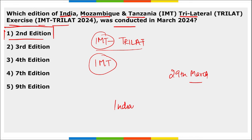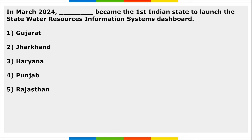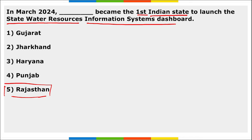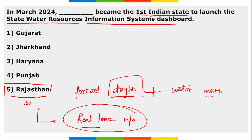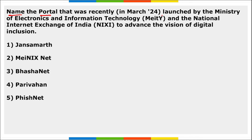From the Indian side, INS Teer and INS Sujata took part in the IMT Trilat exercise. Next, Rajasthan became the first Indian state to launch the State Water Resource Information System Dashboard. This dashboard will provide real-time information about water resources and will predict or forecast droughts in particular areas of Rajasthan.